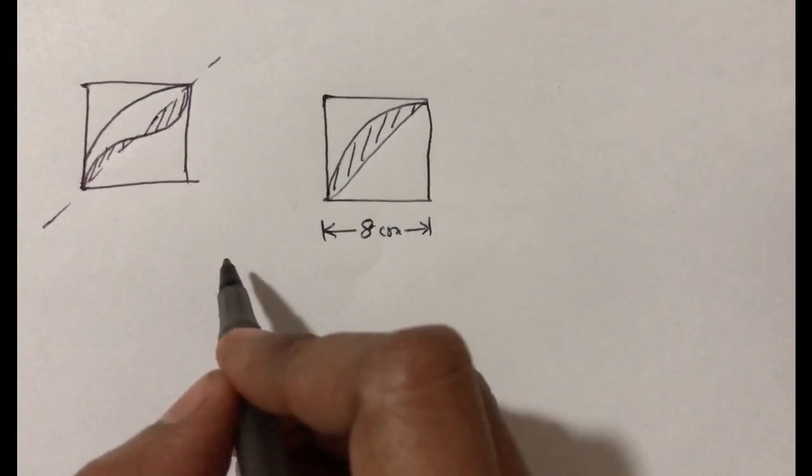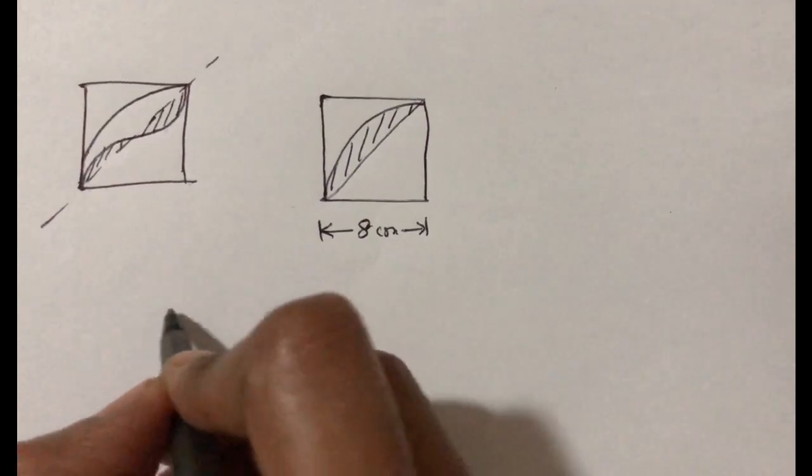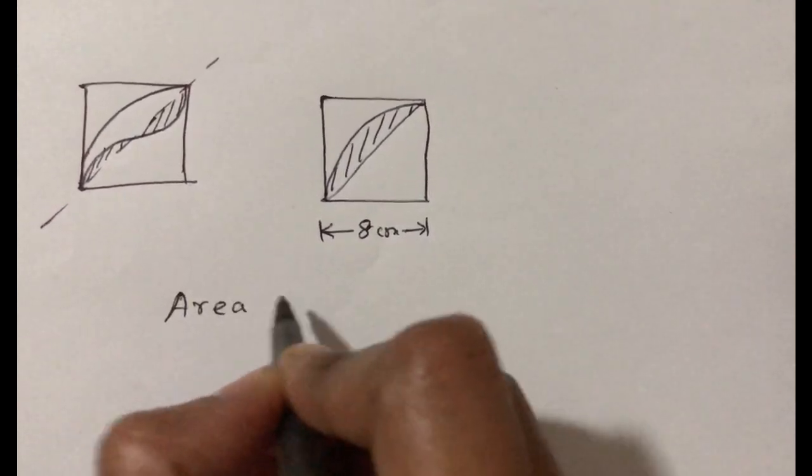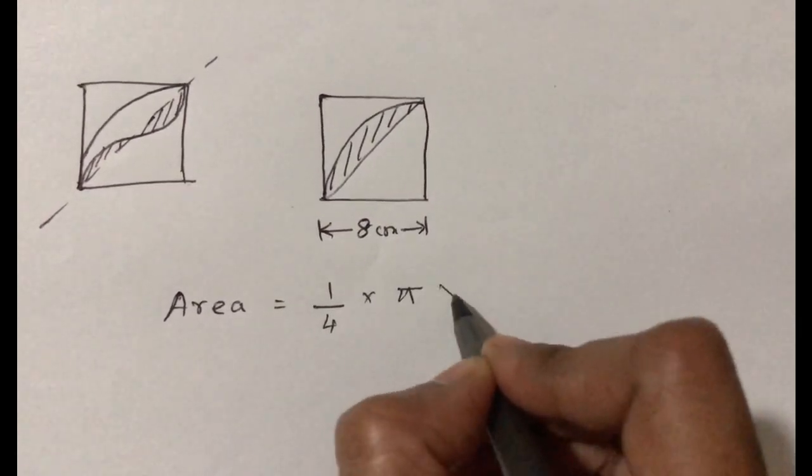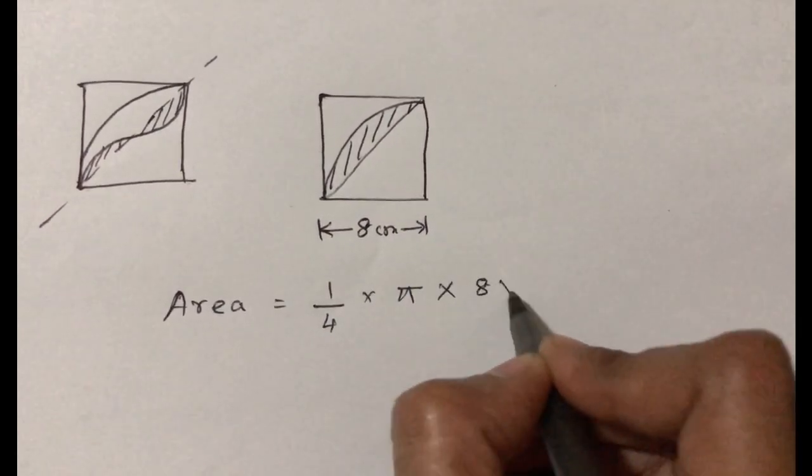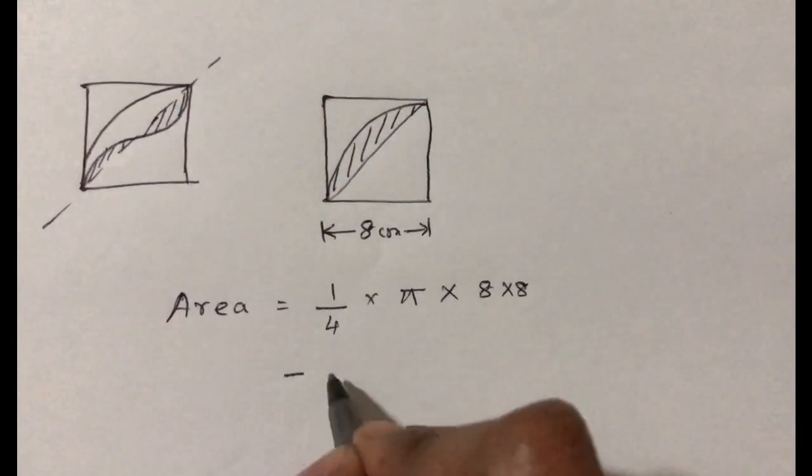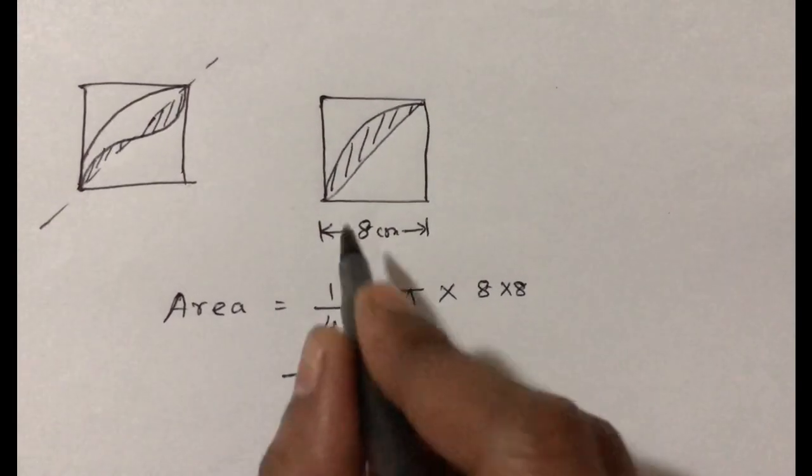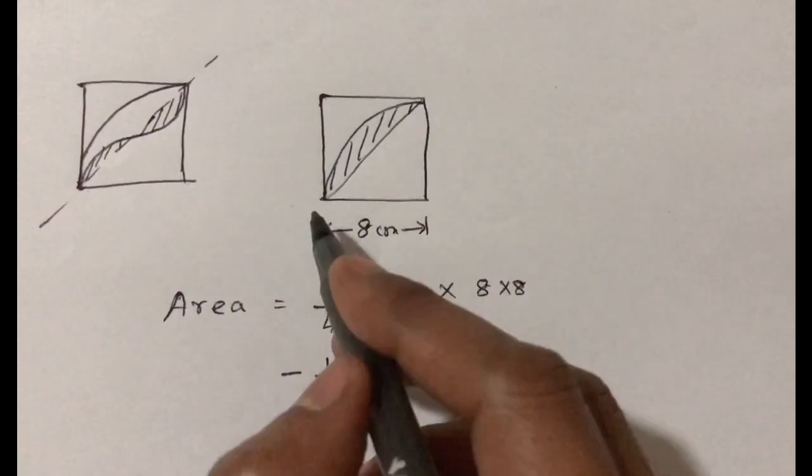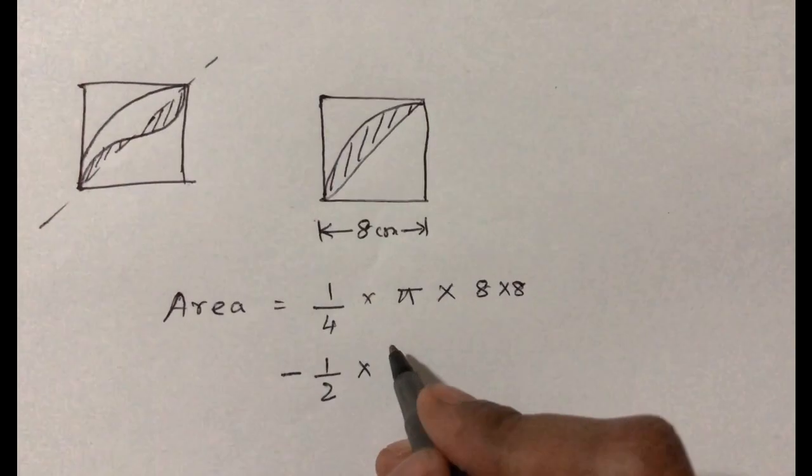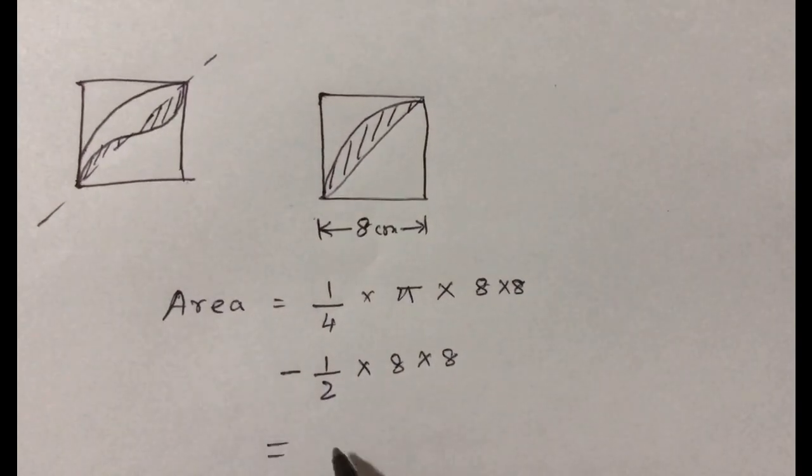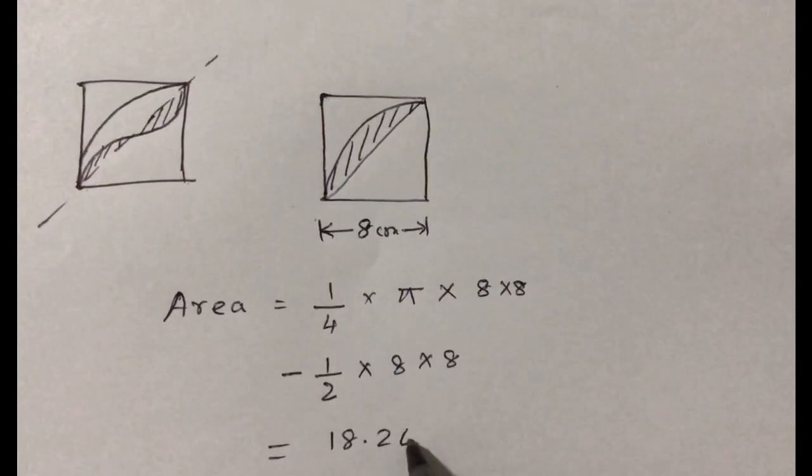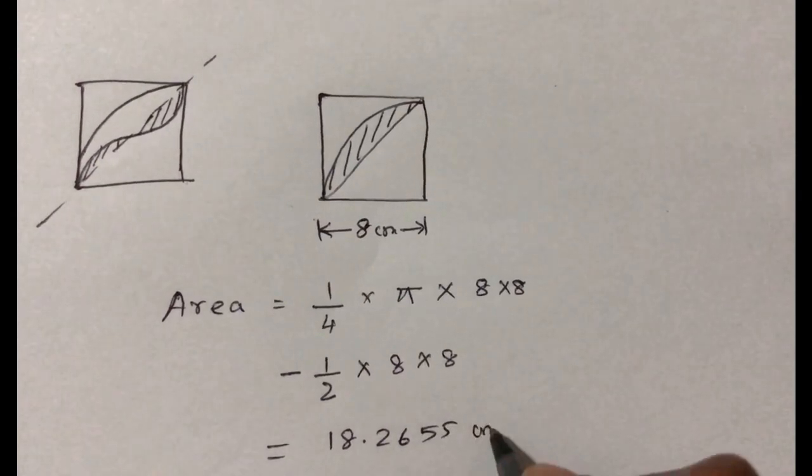Now the area of the shaded portion is equal to one fourth of π r squared. R here is eight times eight, minus half of length times width, or your base times height in this triangle, which is eight times eight. So the answer is 18.265 centimeter square.